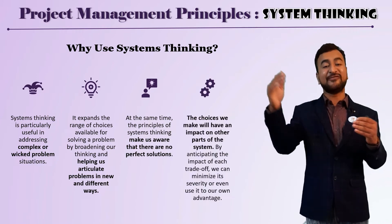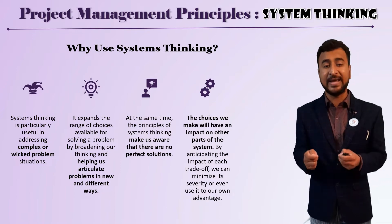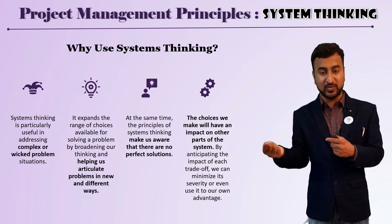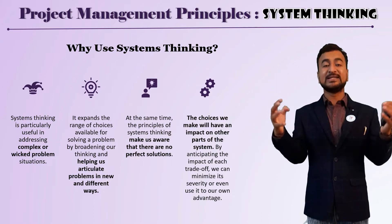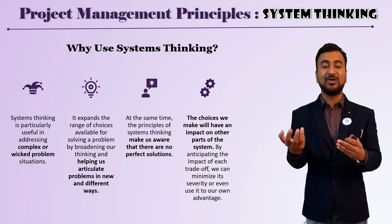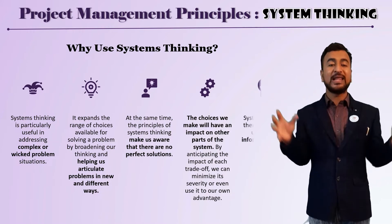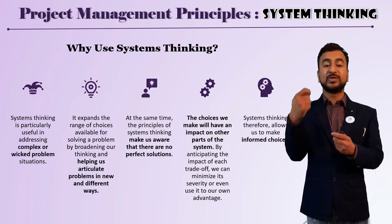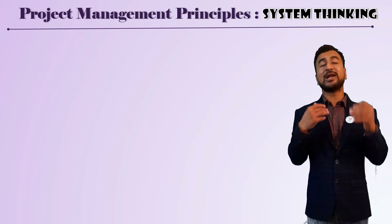The choices we make will have an impact on other parts of the ecosystem or other projects, since we live in an interconnected world — every choice has an opportunity cost. Considering all these things helps us make very informed decisions. Now, how do we use system thinking? For that, you need to understand the iceberg model.